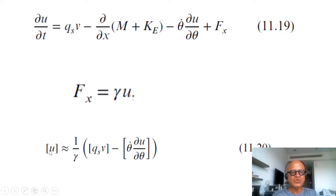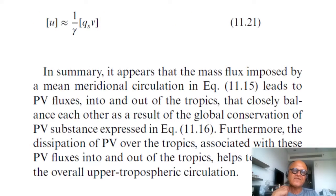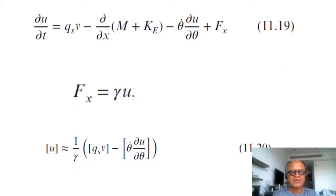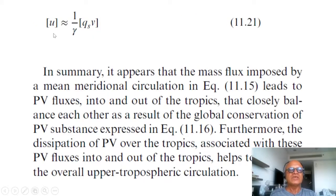You see that the zonal mean u is approximately equal to one over gamma times the meridional advection term minus the diabatic term. And in the case of adiabatic situation this goes to zero. So yes, if the system is adiabatic then this goes to zero.